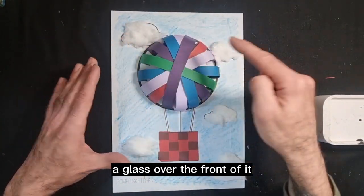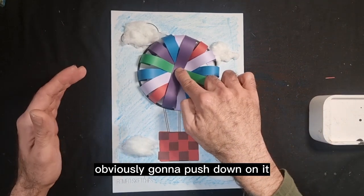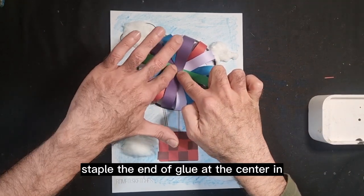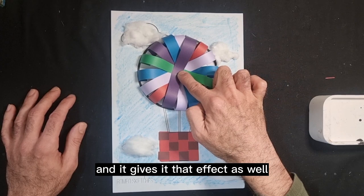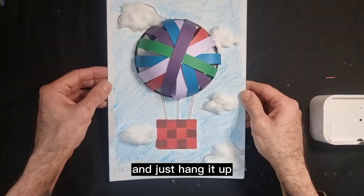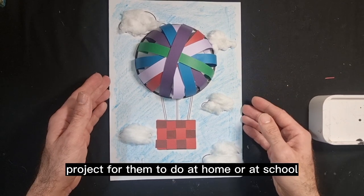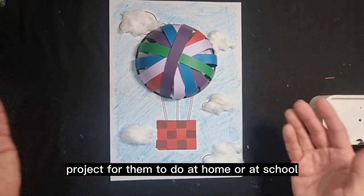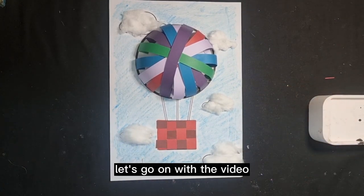So if you've got like a display board and you've got like a glass over the front of it, obviously it's going to push down on it. Staple that in or glue the center in and it gives it that effect as well. So it's really cool if you want to leave it how it is and just hang it up. It's a great little project for them to do at home or at school. So what are we waiting for folks, let's go on with the video.